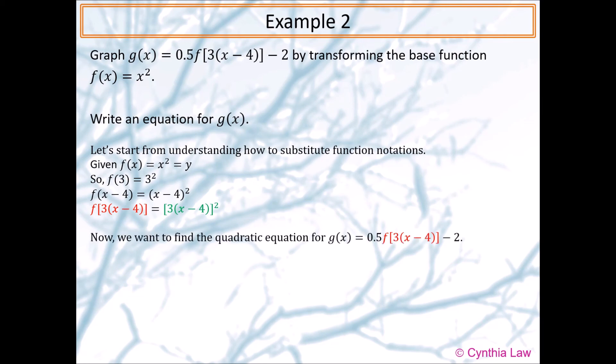Now we want to find the quadratic equation for g(x). So we replace the function part of the function notation with the equation part and then we just need to simplify. We expand to get 3²(x - 4)² from the previous step, and then we multiply things together, simplify it, and we have our final equation.